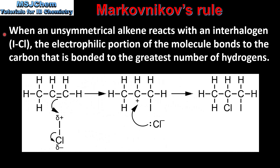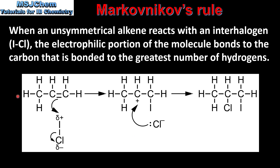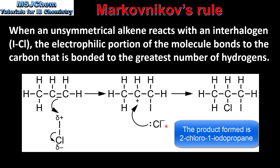Next we'll use Markovnikov's rule to predict the product between an unsymmetrical alkene and an interhalogen. When an unsymmetrical alkene reacts with an interhalogen — which is two halogens bonded together — the electrophilic portion of the molecule bonds to the carbon that is bonded to the greatest number of hydrogens. In this reaction we have propene reacting with iodine monochloride. Because chlorine is more electronegative than iodine, the chlorine has a negative dipole and the iodine has a positive dipole. The iodine is the electrophilic portion of the molecule and it bonds to the carbon already bonded to the greatest number of hydrogen atoms, which is this carbon here, producing a carbocation. The chloride ion then uses its lone pair of electrons to form a bond with this carbon atom.